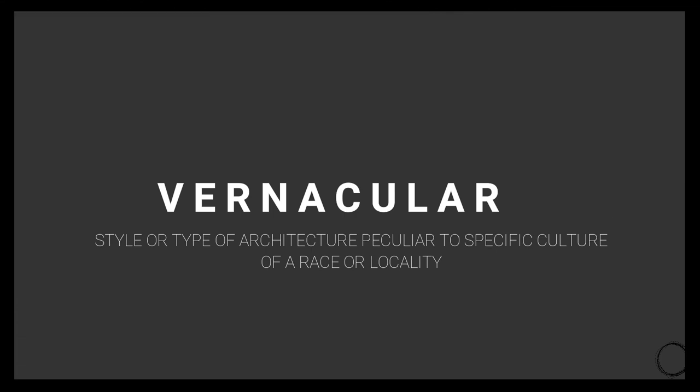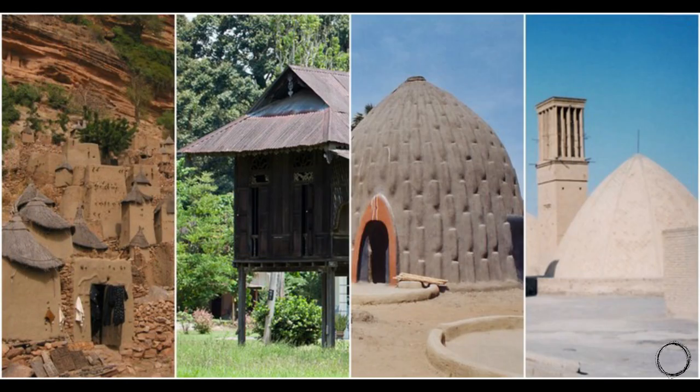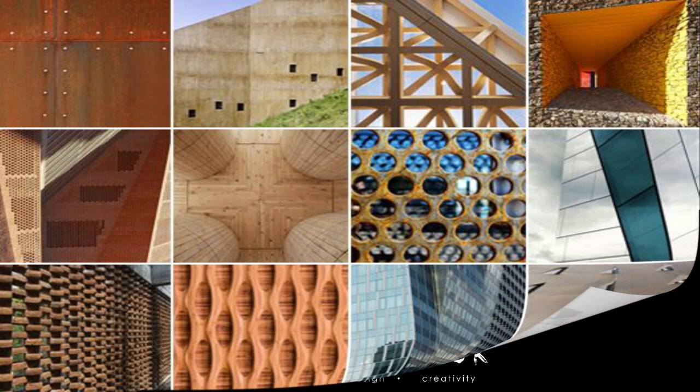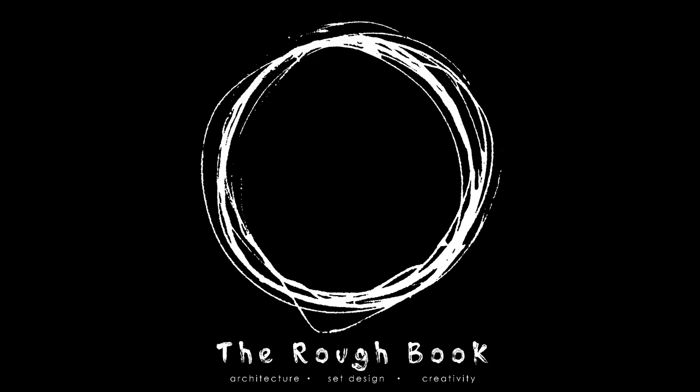The next term is vernacular, which means the style or type of architecture peculiar to a specific culture, race, or locality. Any form or style of architecture that comes from its origin, place, reality, or race is called vernacular, as seen in the images above. Here we come to the end of the video — the next video will cover materials used in architecture, another important topic for NATA. Make sure you subscribe; until then, see you, bye!